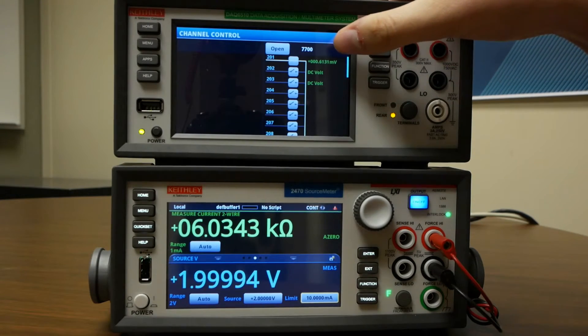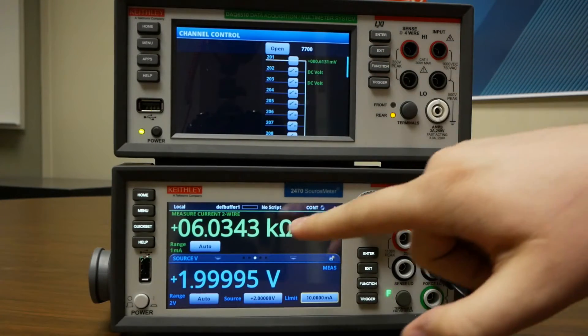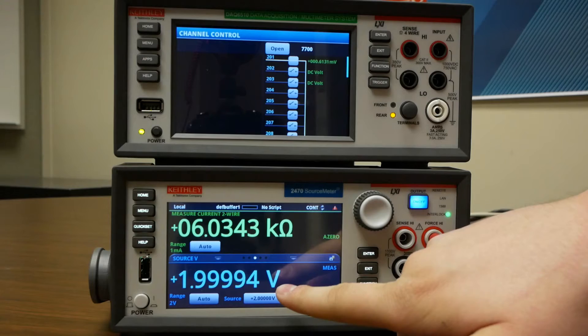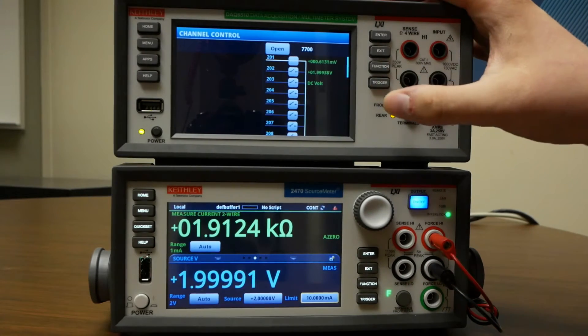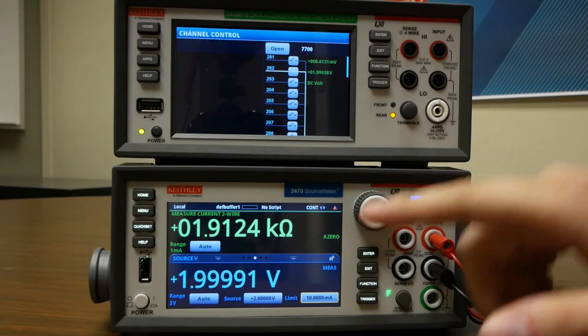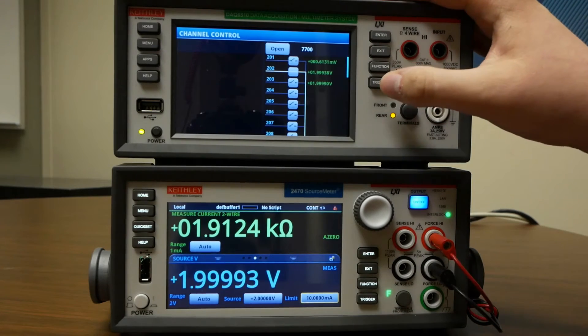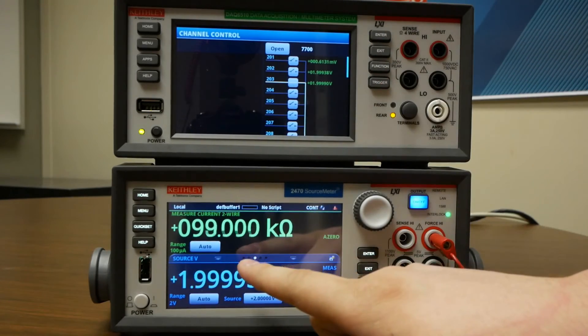When I press the trigger key, we close channel one and we get a six kilo ohm measurement when we're sourcing the two volts. Press it again and we move to channel two with a two kilo ohm measurement and channel three with 100 kilo ohms.